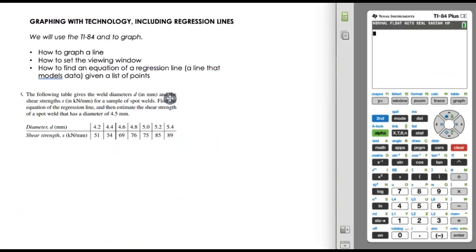And the last thing we're going to look at in Lesson 5-1 together is this idea of graphing a line using technology. And we're going to be using our TI-84 calculator for this. So we're going to talk about how to set up a good viewing window, get the equation of a regression line, one that models the data that's given.